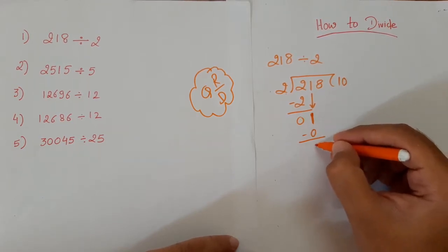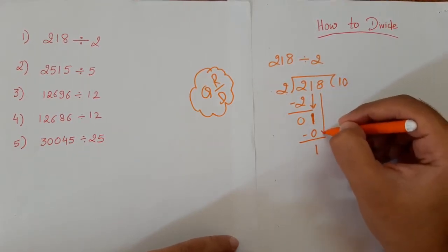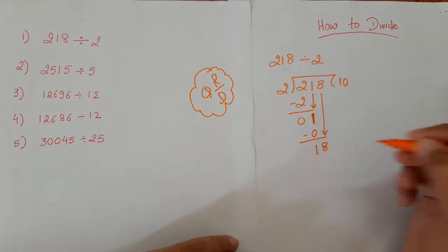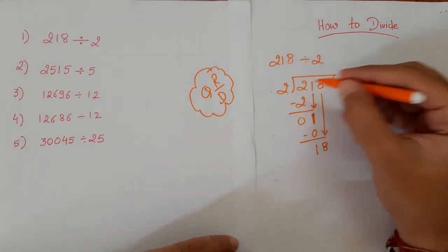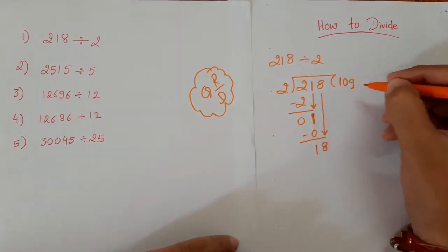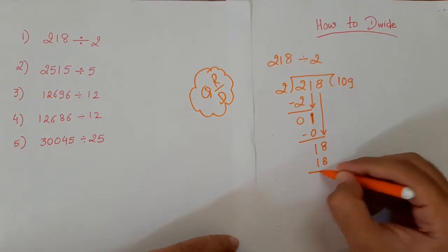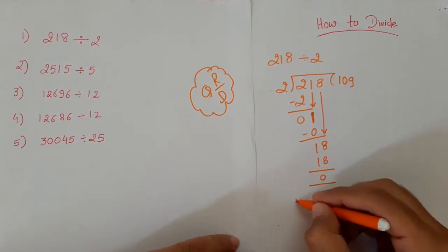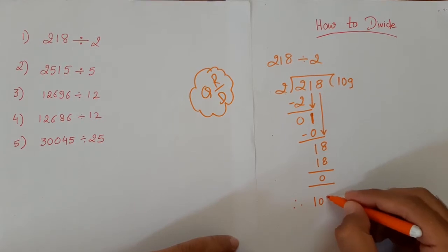1 minus 0 is again 1. And we now bring it down. So now 2 times 1. Okay. And this is our answer, 109.